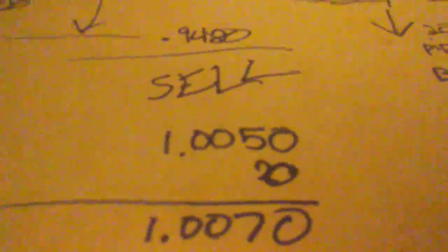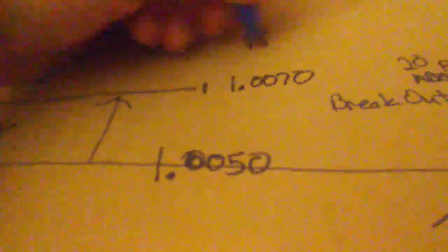If we take 20 pips from 0.9500 we get 0.9480. So we're going to tell MetaTrader: if this market bounces out of this range and comes below 20 pips to 0.9480, do us a sell. That way we don't have to sit there and watch and wait — it will execute the sell or buy automatically.